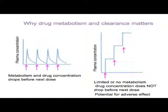Why does drug clearance matter? It matters a great deal. If you're on medication, your clinician might have prescribed your drug and said take one twice a day or three times a day — the reason for this is because of drug metabolism. In a normal situation where a person can carry out the detoxification process, you take the drug, the plasma concentration increases, then as the body detoxifies the drug and removes it, the concentration decreases. You take your next dose, plasma concentration increases again, and over time the chemical is removed — and so on.